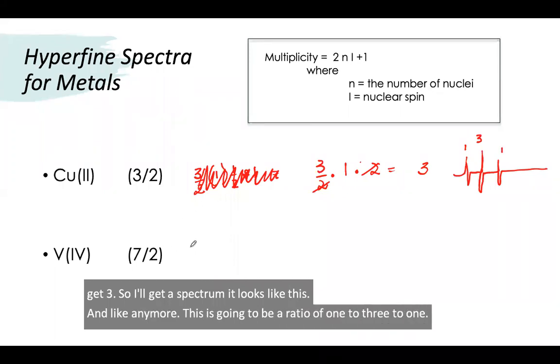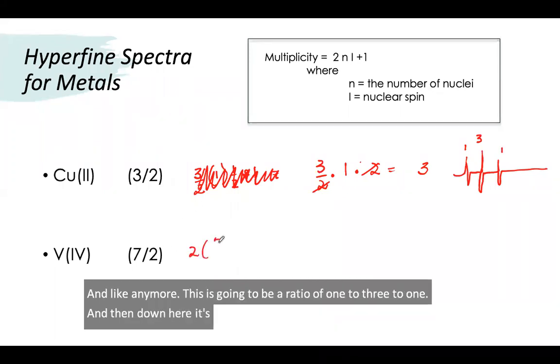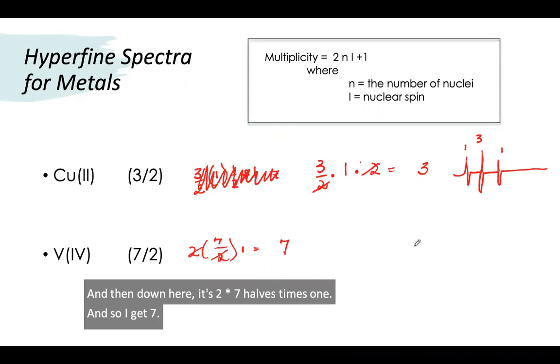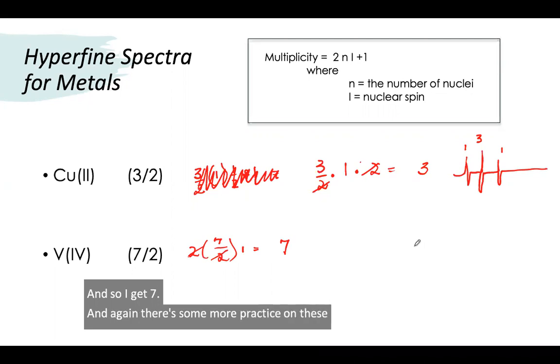And then for vanadium it's two times seven halves times one, so I get seven. Again there's some more practice on these in the workbook.